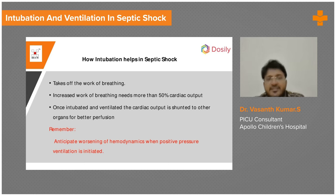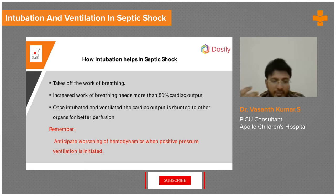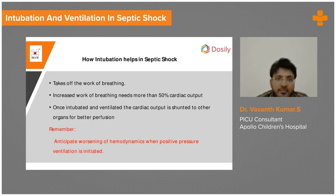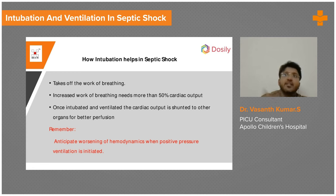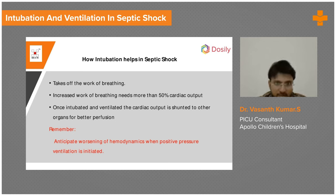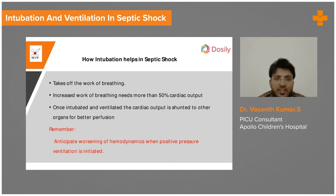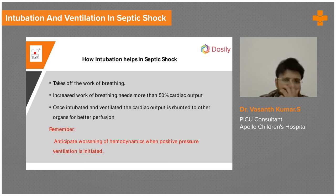Remember, during the process of intubation you give sedation and muscle relaxants, and there can be a drop in blood pressure. Because intubation involves positive pressure, venous return is reduced — the blood has to go against gravity to the right atrium. There is a chance of hypotension during intubation, plus sedation causes vasodilatation and pooling of blood. Septic shock is already a vasodilated state, so positive pressure and sedation together reduce venous return. You will need to either preload with more fluids or start a vasoactive agent like noradrenaline at that time.